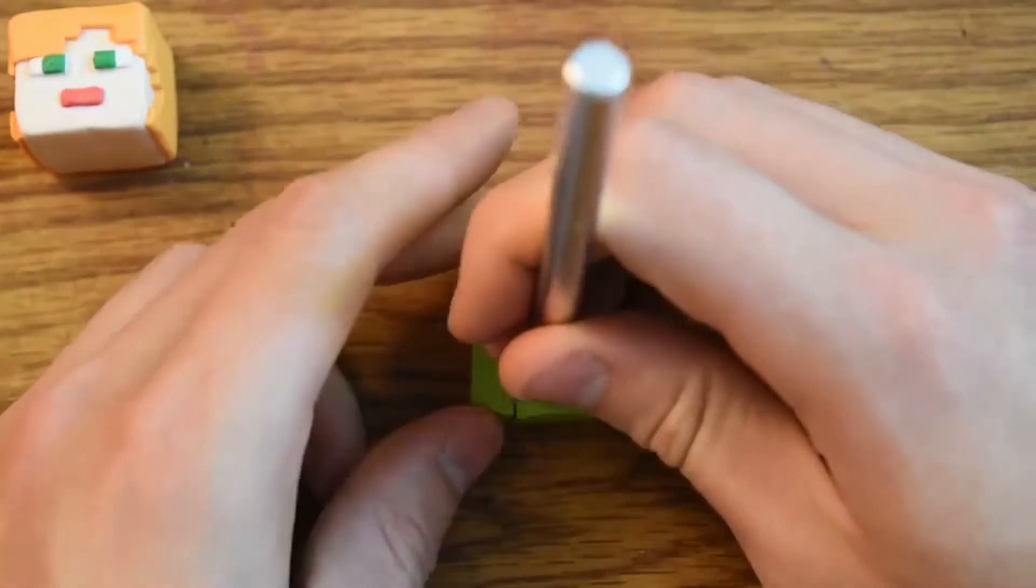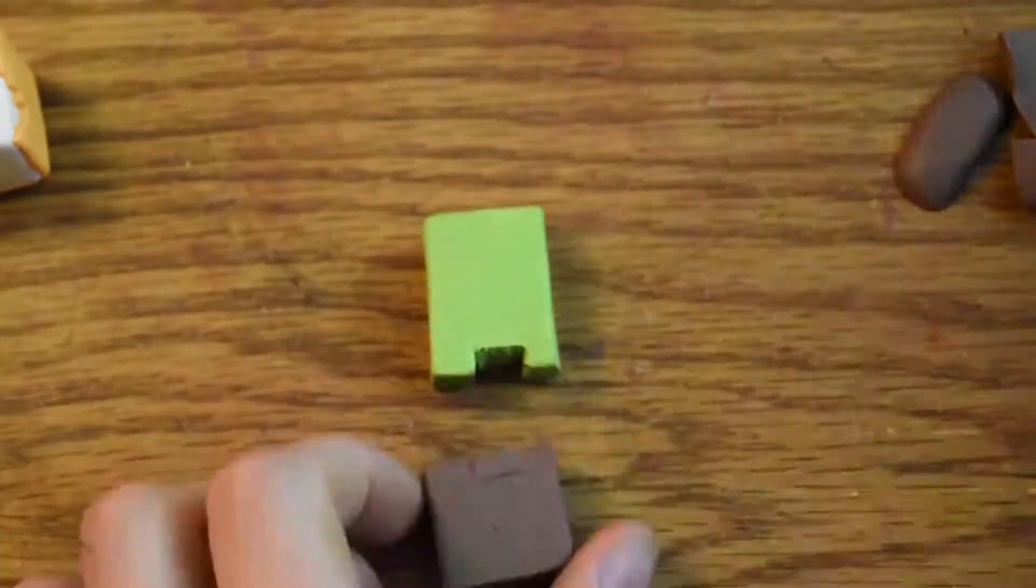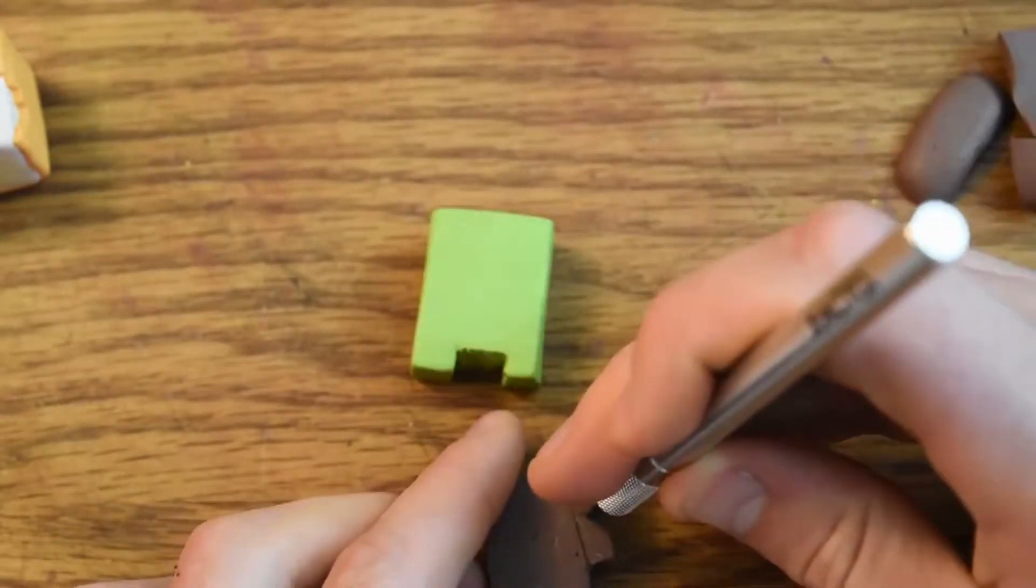We need to cut out this little part at the bottom here, and this will be where we can connect the lower body part, I guess the belt part, into it.